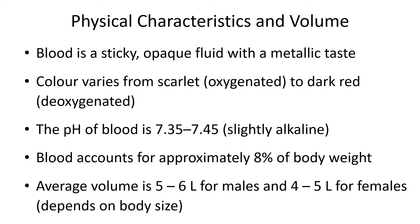Blood is a sticky opaque fluid with a metallic taste — it tastes metallic because it contains iron. There's not a ton of iron in your body; if you condensed all of it you'd have enough to form a small nail. But that iron binds to oxygen. Each hemoglobin molecule in your red blood cells has four iron atoms, and each iron atom will bind to one molecule of oxygen. The color of blood varies from scarlet — very bright intense red if oxygenated — to dark red if deoxygenated.